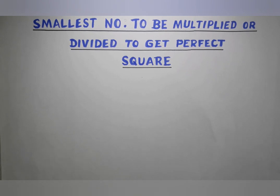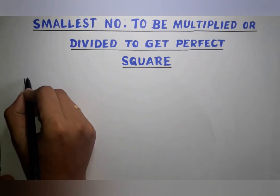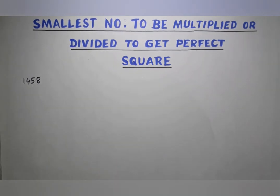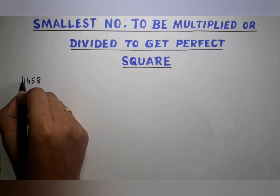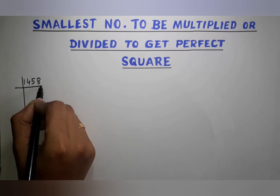In today's video we're going to find out which number needs to be multiplied or divided to get a perfect square number. Let us take an example — suppose I take the number 1458. This number is not a perfect square number, so we cannot find its square root directly. To find the smallest number to multiply or divide to make it a perfect square, we use the prime factorization method.